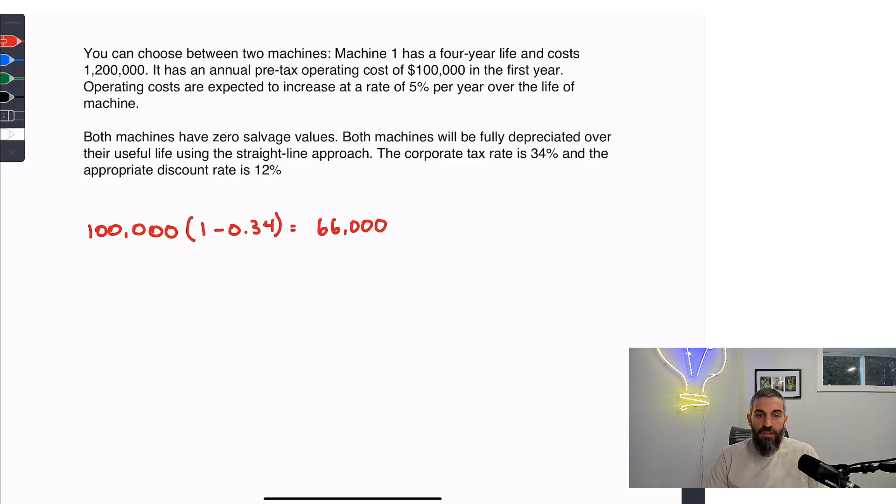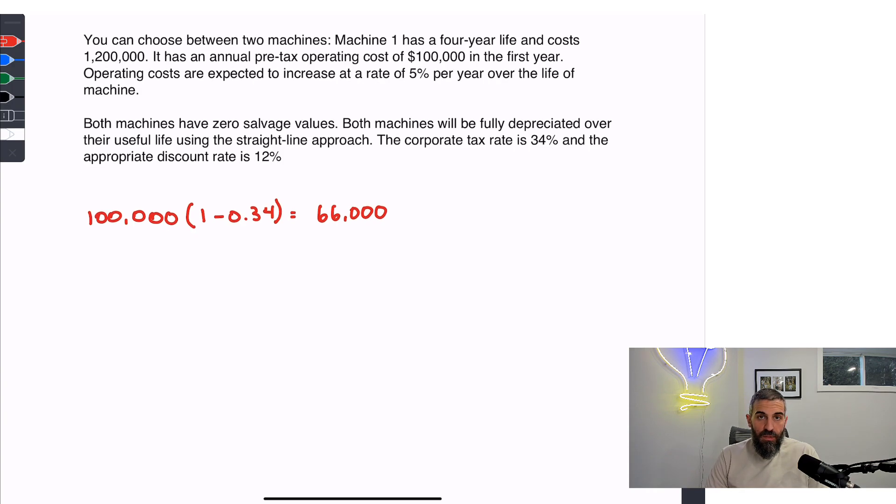It's going to increase at a rate of 5% over the life of the machine, so this is now a growing annuity. I'm going to use the present value of a growing annuity. I'll take that first payment of $66,000 divided by the discount rate minus the growth rate of 5%. Multiply that by one minus one plus the growth rate divided by one plus the discount rate to the power of four. So I get a present value of $214,522.44.